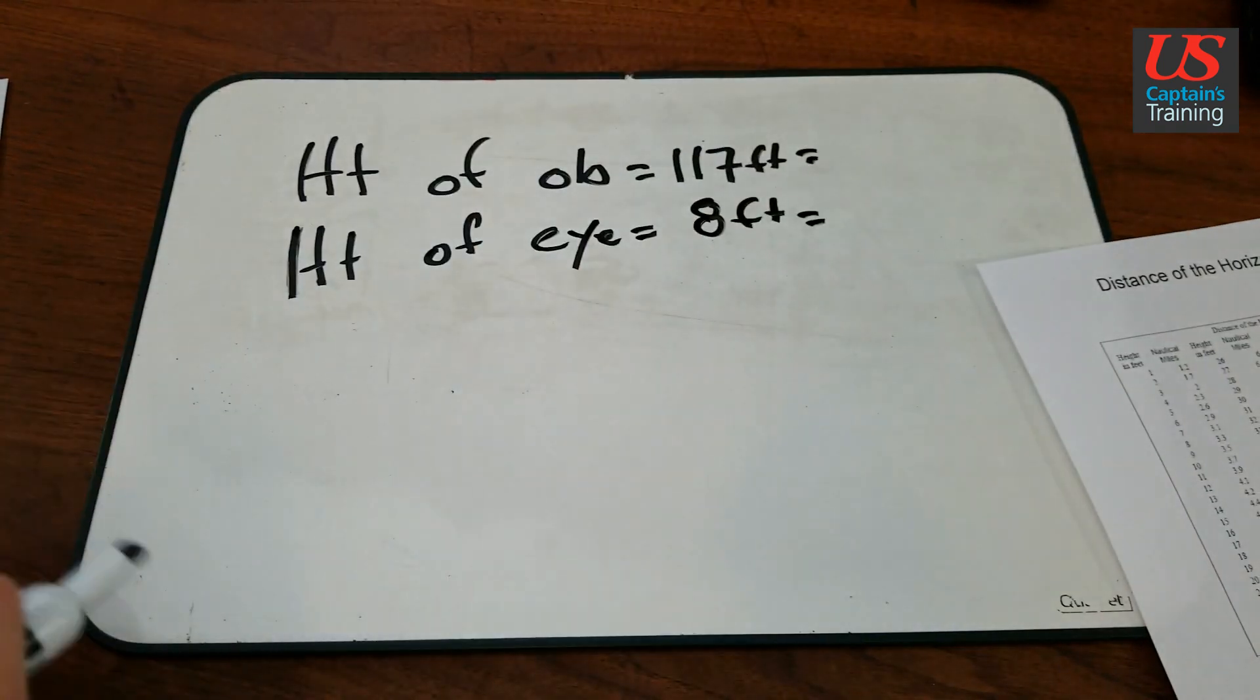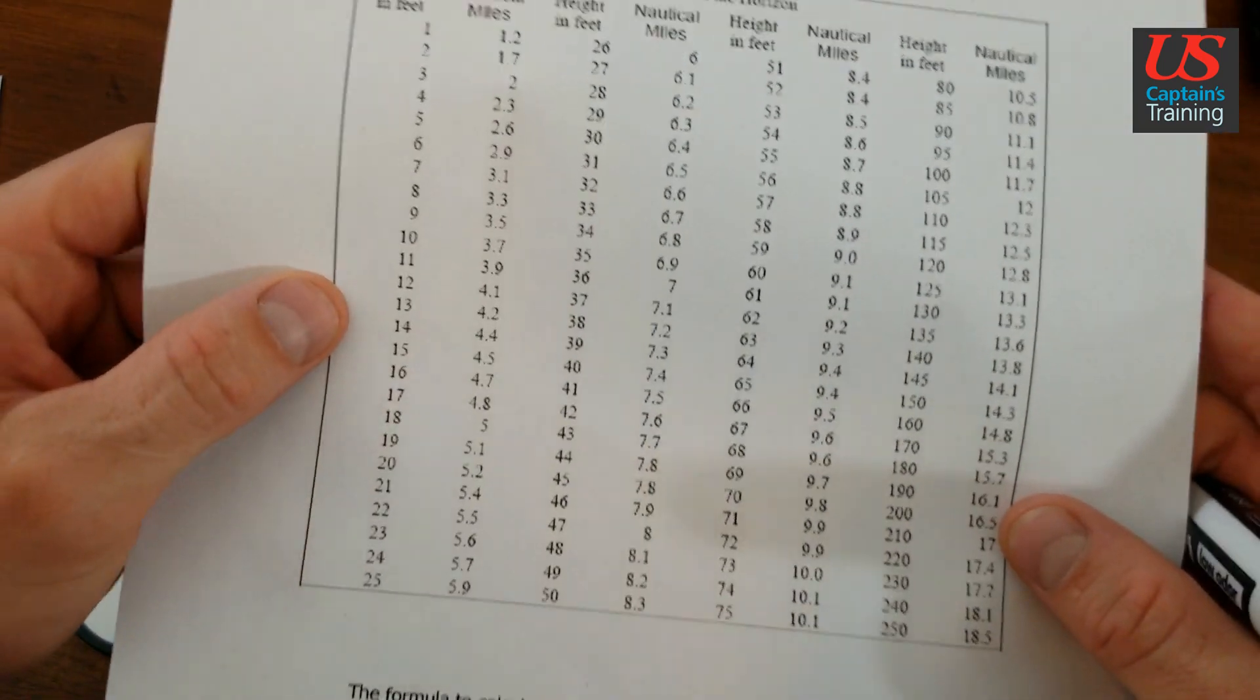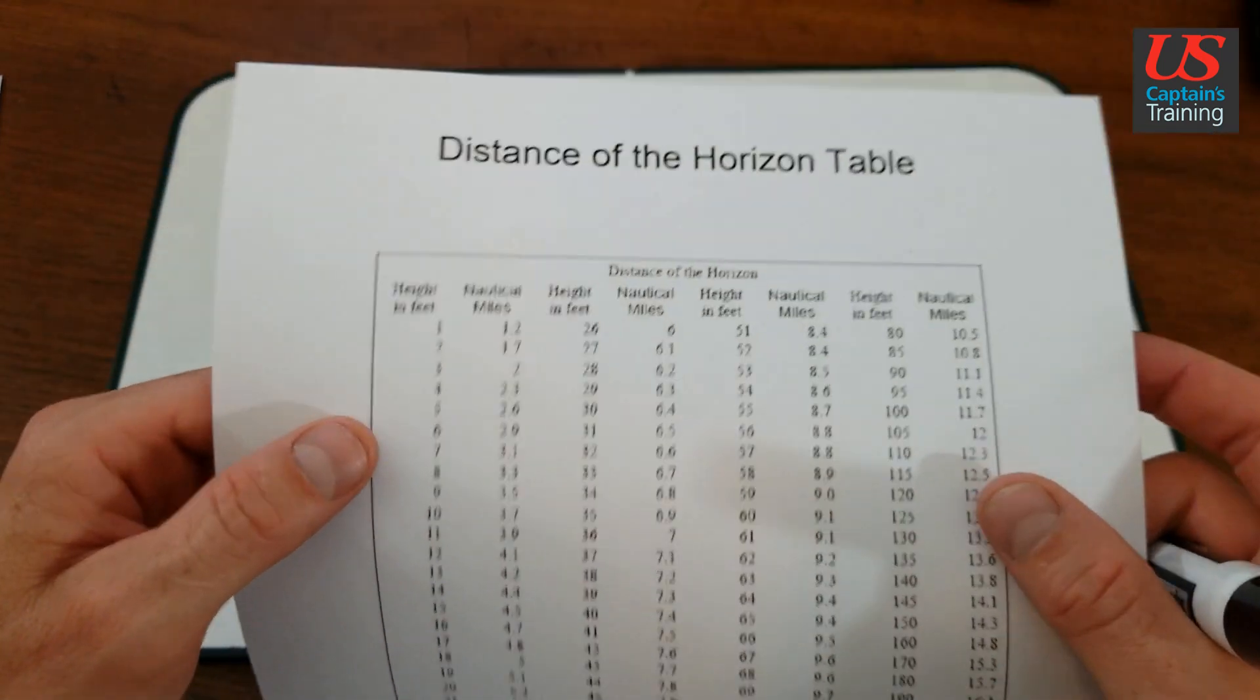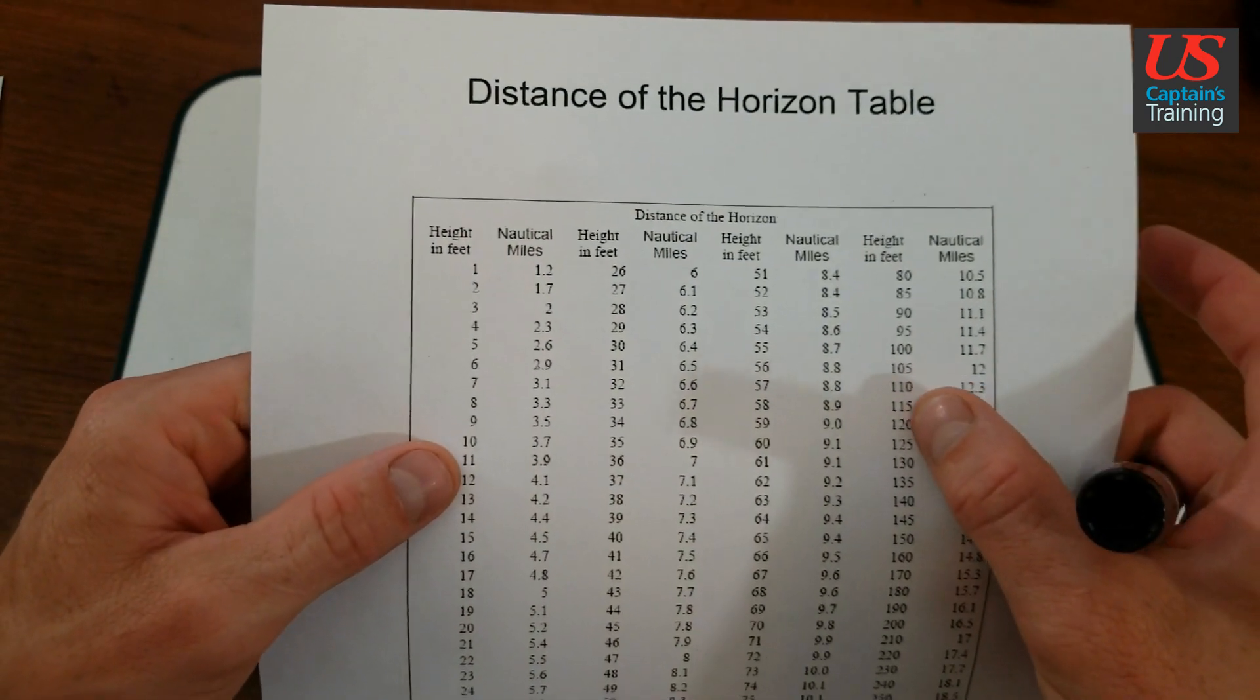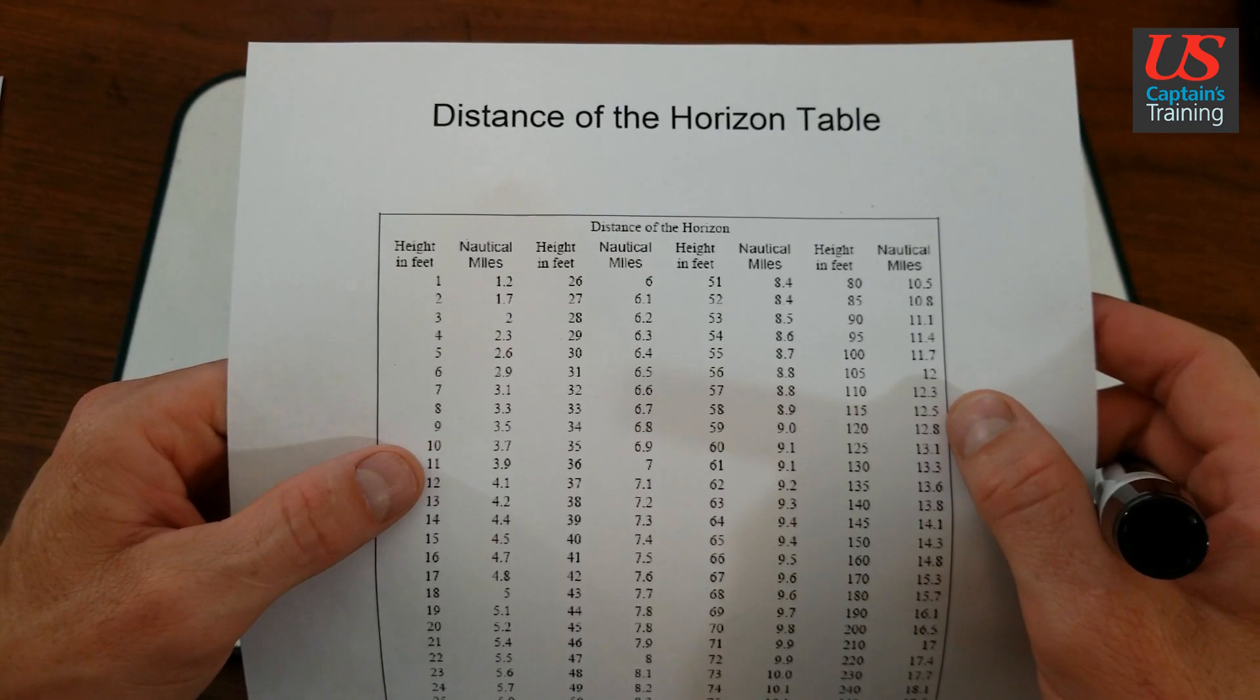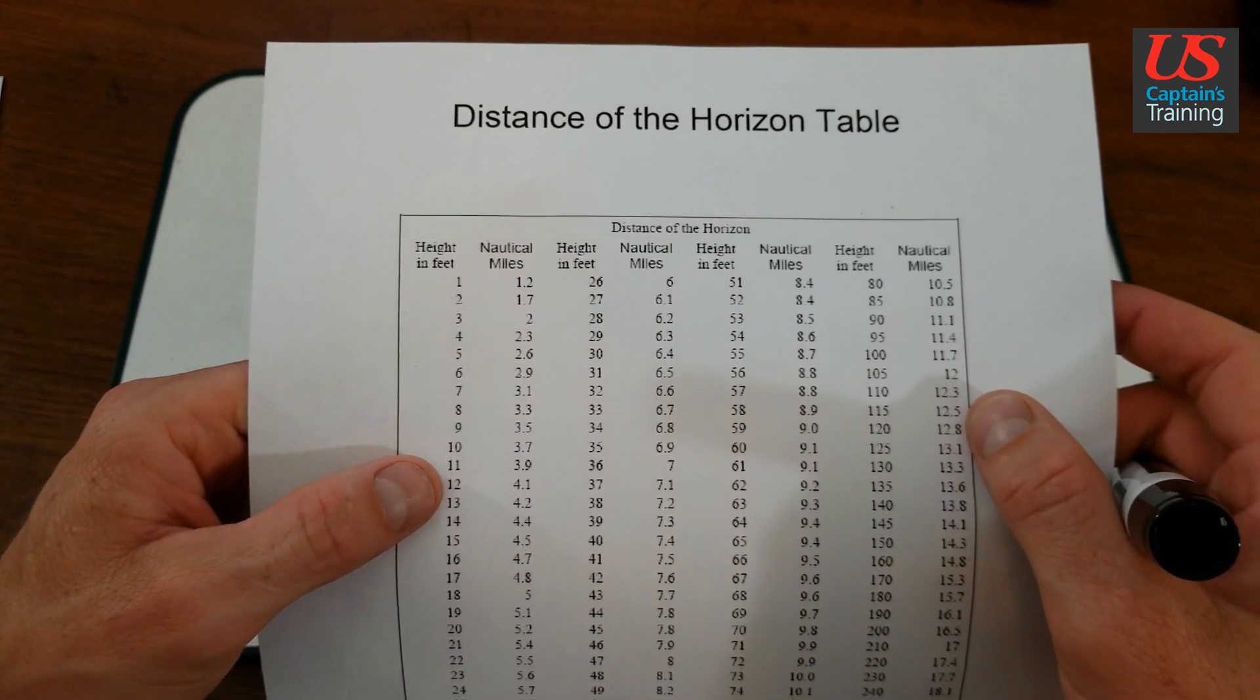Now let's go to the distance of the horizon table. And for 117 feet, we're going to be over here, 115, 120. We're going to have to split that in half, right? 117 is about halfway through.